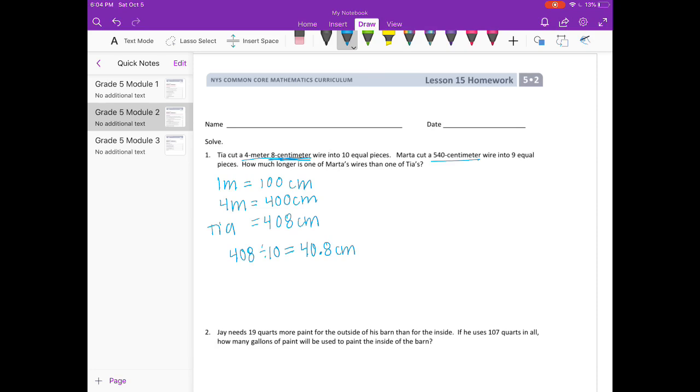Marta cut her 540 centimeters into nine equal pieces. Well, 54 divided by nine is six, so 540 divided by nine would be 60 centimeters. Now it's saying how much longer is one of Marta's than one of Tia's? So how much longer is 60 than 40.8?